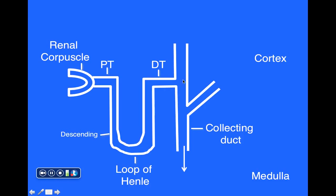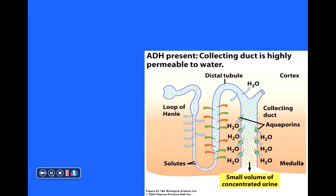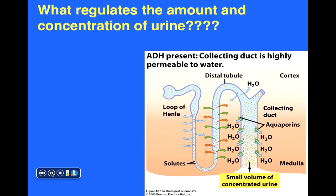As urine makes its way into the collecting duct and moves through it — with the cortex toward the top and medulla toward the bottom — the concentration gradient of solutes from cortex to medulla causes filtrate to lose water by osmosis. Just like in the descending limb of the loop of Henle, the filtrate becomes more and more concentrated as it travels through the collecting duct, until finally it exits the kidney as urine.